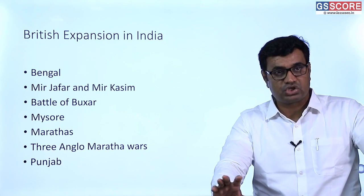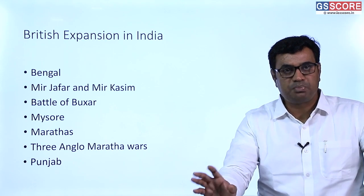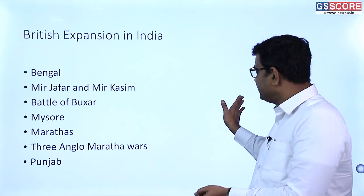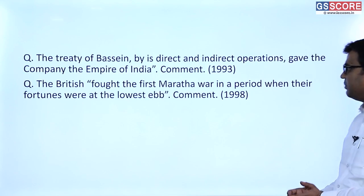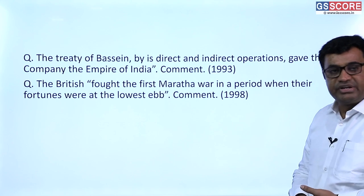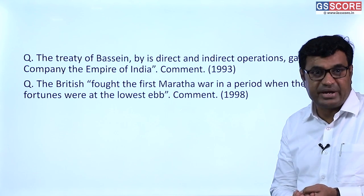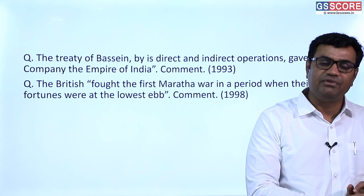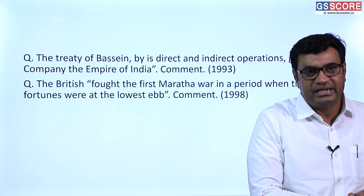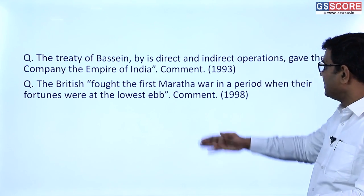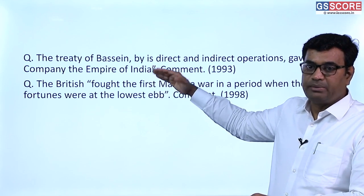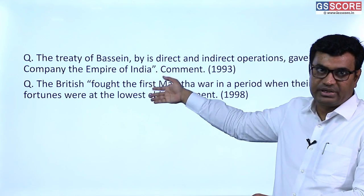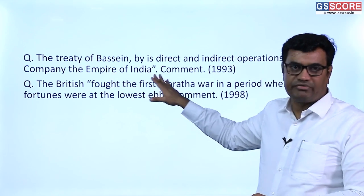With this, large parts of Indian territory came under British authority. Regarding previous year questions from this topic: 'The Treaty of Bassein by its direct and indirect operations gave the company the Empire of India.' The Treaty of Bassein was signed between the British and the Maratha Peshwa at Pune, allowing British to maintain troops in Maratha territory. Since Marathas were the most powerful Indian authority, after their defeat no Indian power could challenge the British, giving Britain the Empire of India.